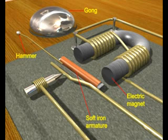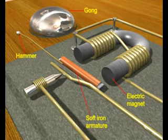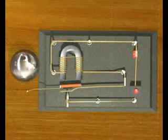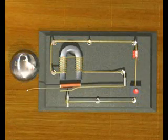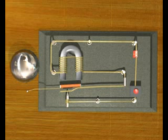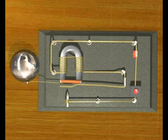The armature has a hammer which hits the gong producing the sound. The circuit is connected to the main or to a battery through its terminals and the bell push switch.